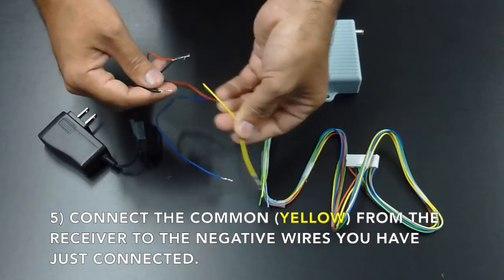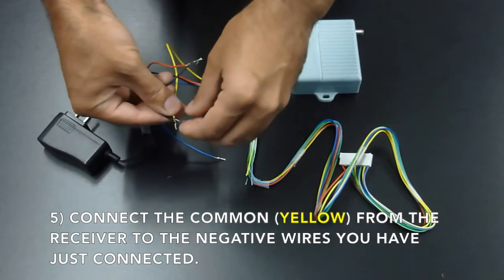Connect the common yellow from the receiver to the negative wires you have just connected.